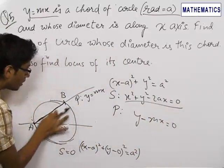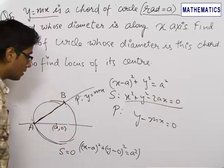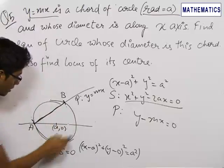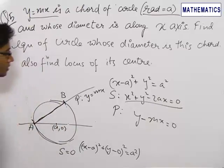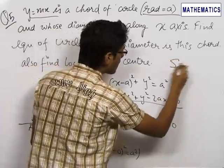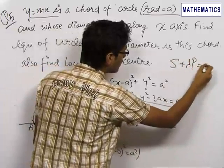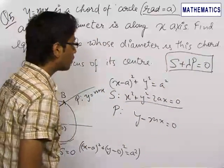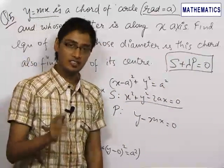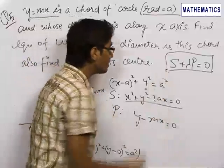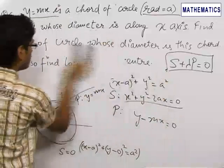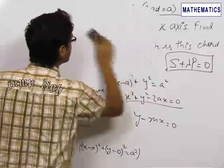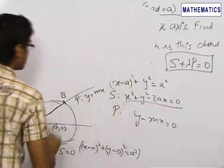Here we use the family concept. The circle passing through the points of intersection of the circle S and a given line P is given by S plus lambda times P equals 0. This we have written using the family concept, which we also learned in straight lines. So S is x squared plus y squared minus 2ax equals 0, and P is y minus mx equals 0.